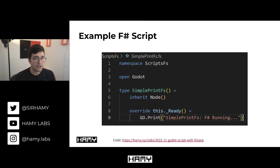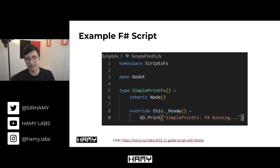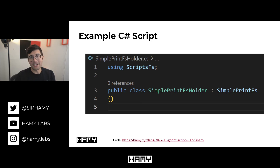Here's an example F-sharp script that we might have. This is a simple print FS, basically doing the exact same thing our earlier C-sharp script did — it just prints to console. We can see that we can use Godot directly, and then we just have this simple type which is basically a class that inherits node — the basic C-sharp stuff, just in F-sharp land. And then we're overriding ready and we're just calling this print. Now we can't reference this directly in Godot, but what we can do is create a C-sharp wrapper or placeholder that basically has nothing in it — all it's saying is it's a C-sharp class and it inherits directly from this F-sharp, which will just make the F-sharp actually run.